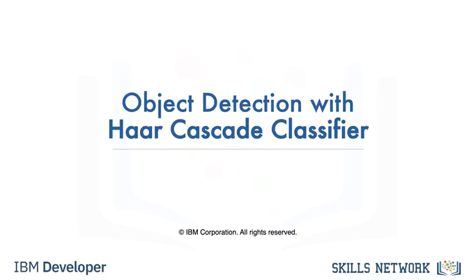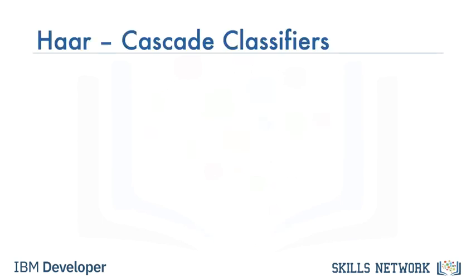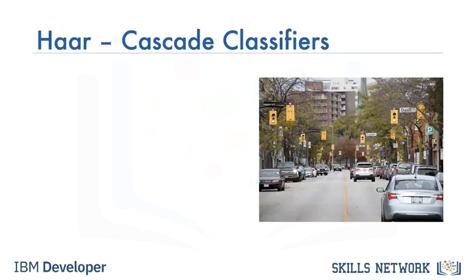In this video, we will provide an overview of object detection using the Haar feature-based cascade classifiers. We are going to use Haar feature-based cascade classifiers to detect cars, traffic lights, pedestrian stop signs, etc., in this image.